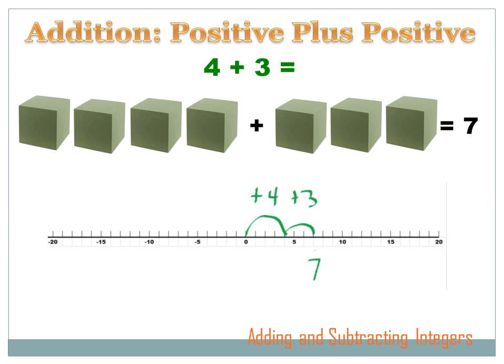This is real easy, but it'll get us started. When you're adding a positive number plus a positive number, it's important to remember that you've got two positive numbers — two motions to the right on a number line. So if we're adding four plus three, we start at zero and move four to the right, and then we add three more, move three more to the right, and we come up with seven. Visually, we've got four green cubes — green means positive — and we add three more green cubes. Four cubes plus three cubes equals seven cubes.